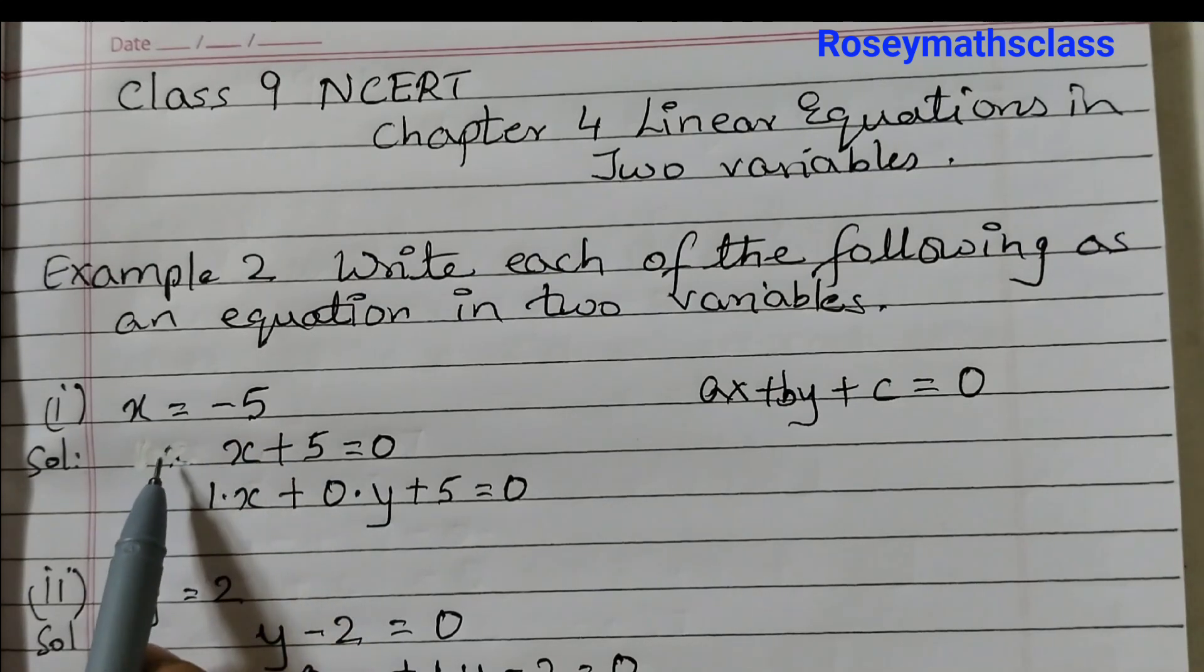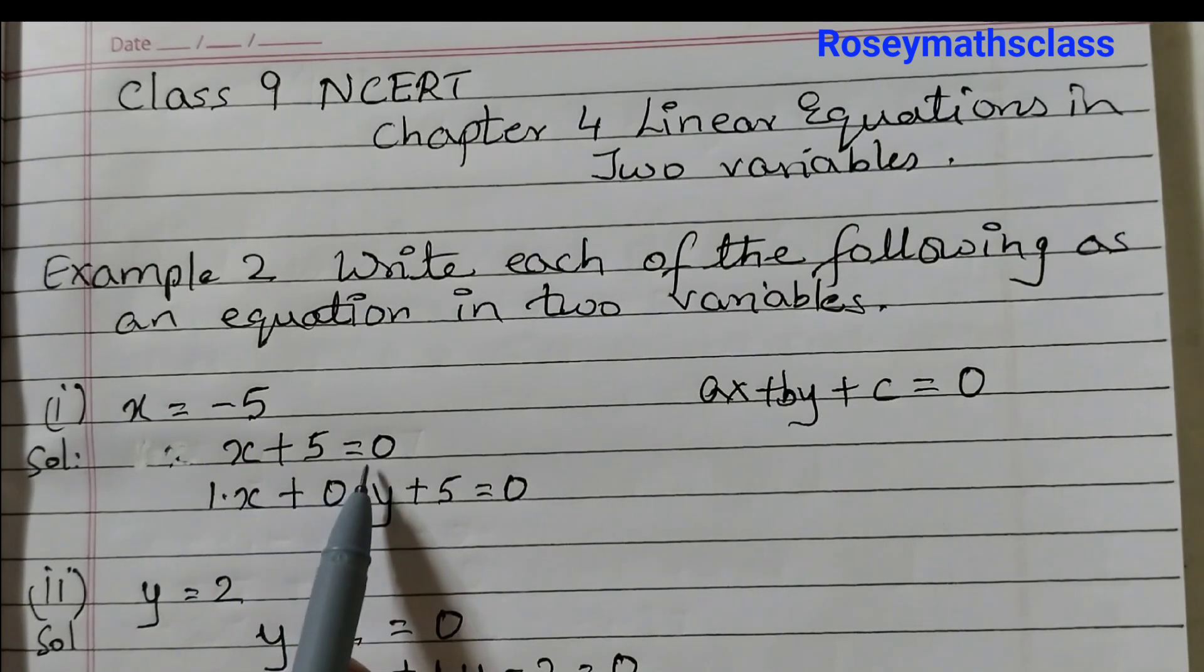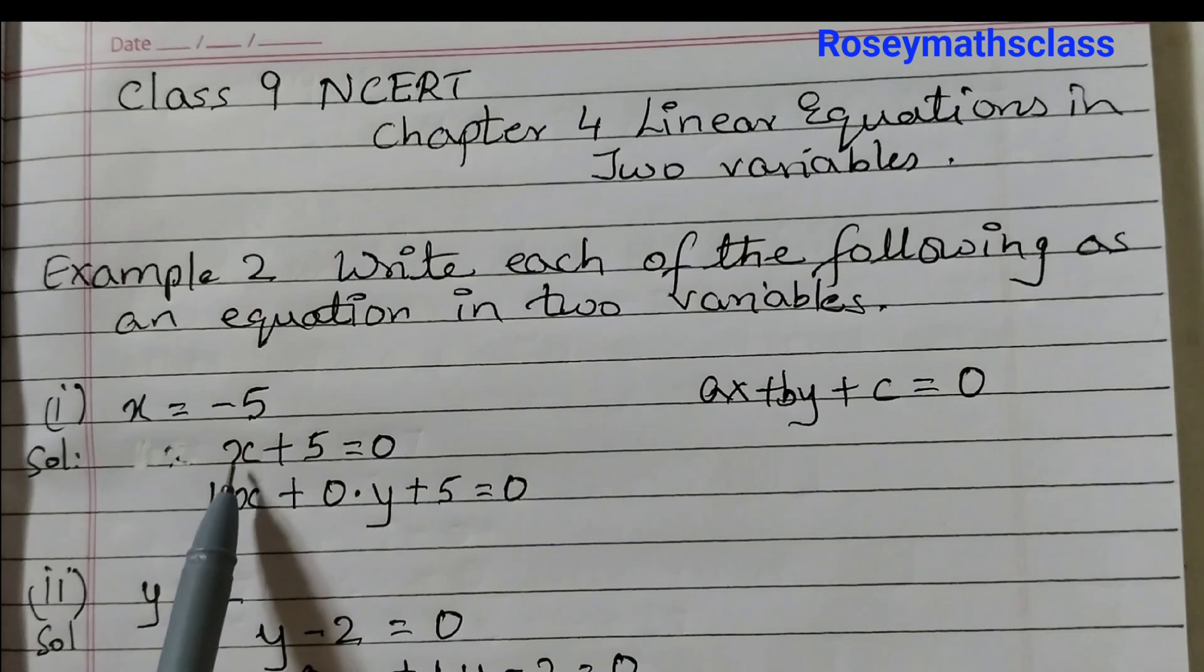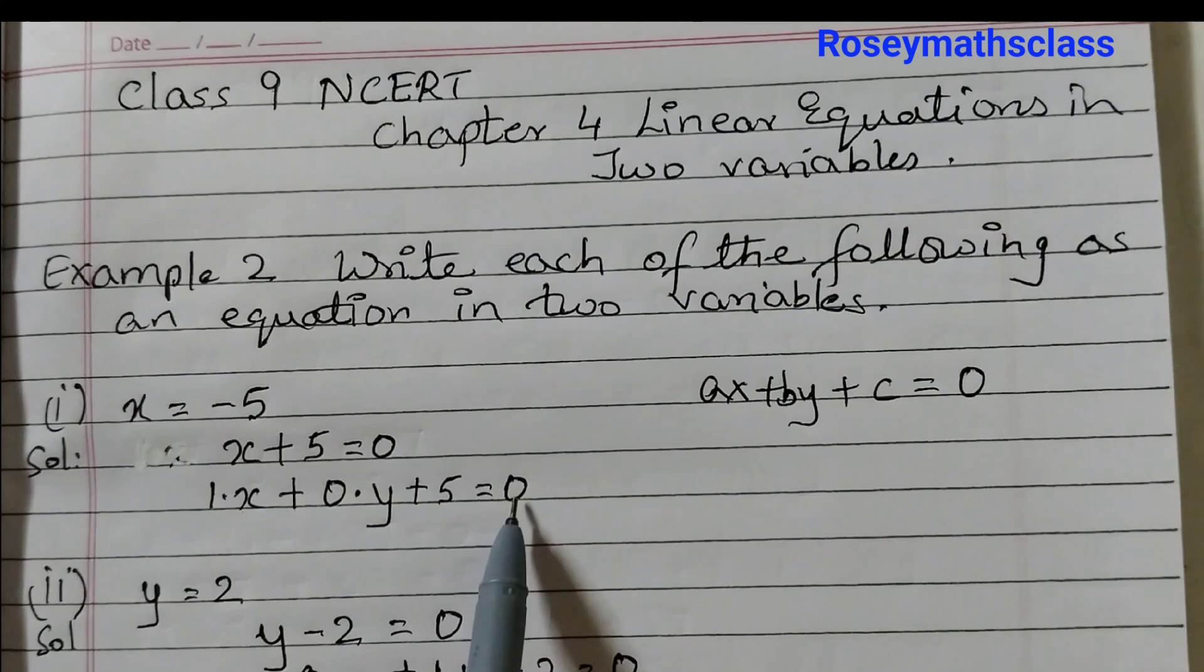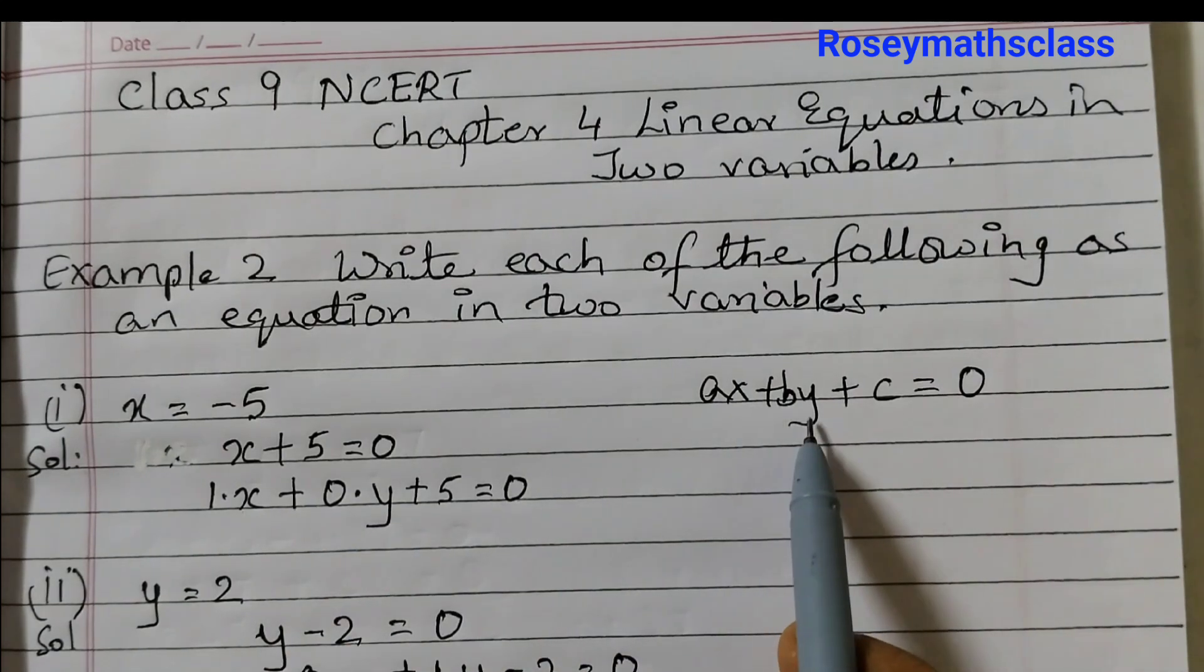Get minus 5 to the left hand side so it will become x plus 5 equals to 0. Now x the coefficient is nothing there, that means it's 1, so 1 into x plus y term is not there so 0 into y plus 5 equals to 0. Now this is in this form.